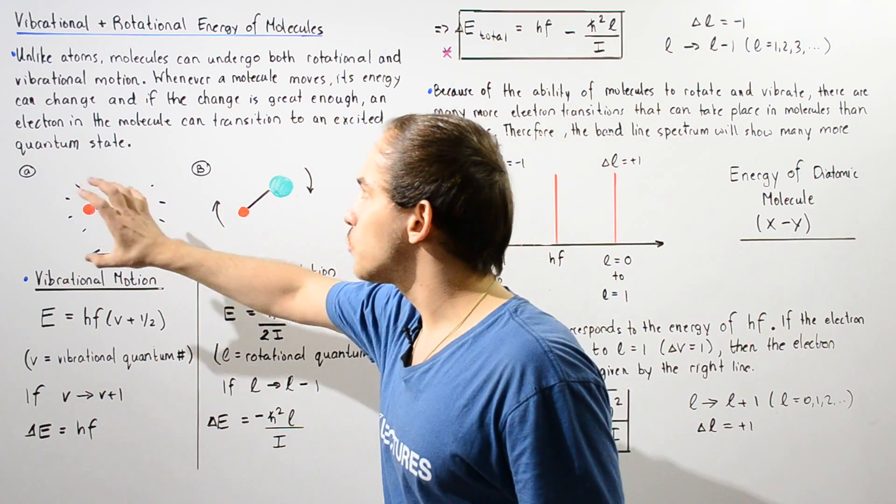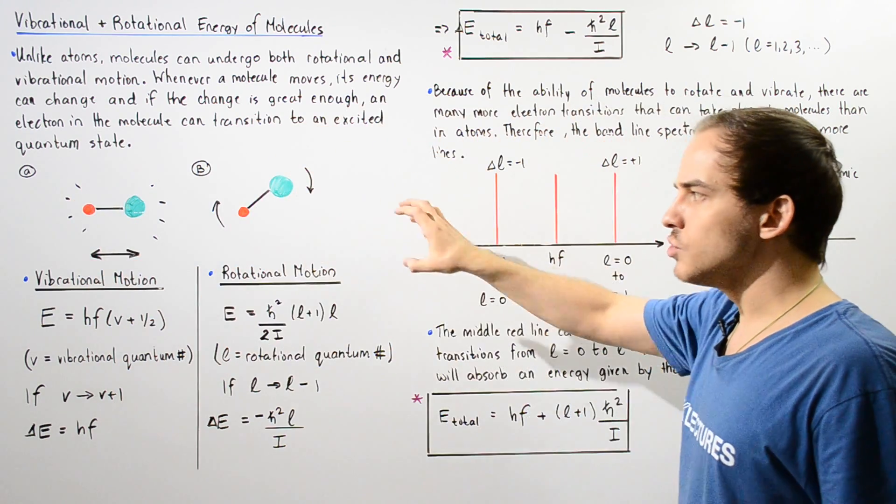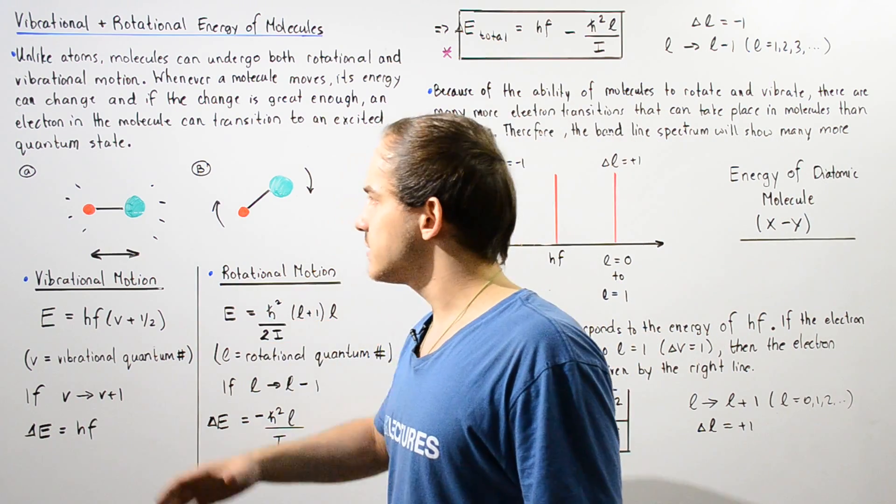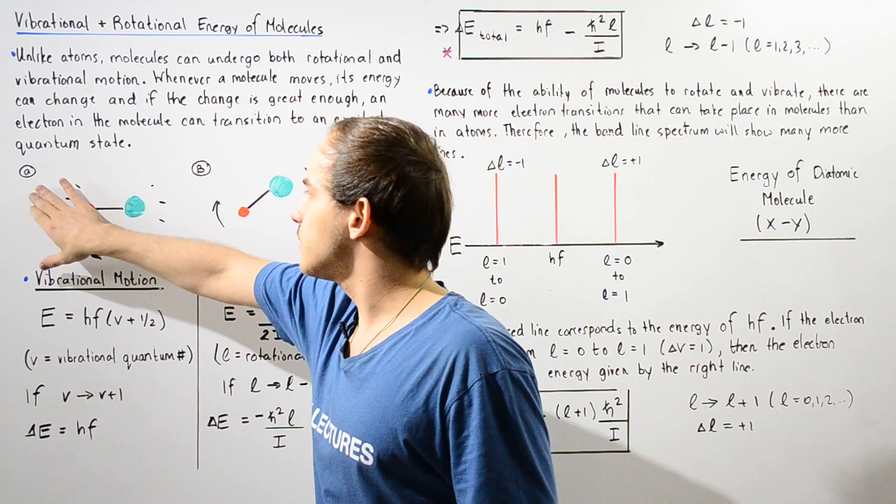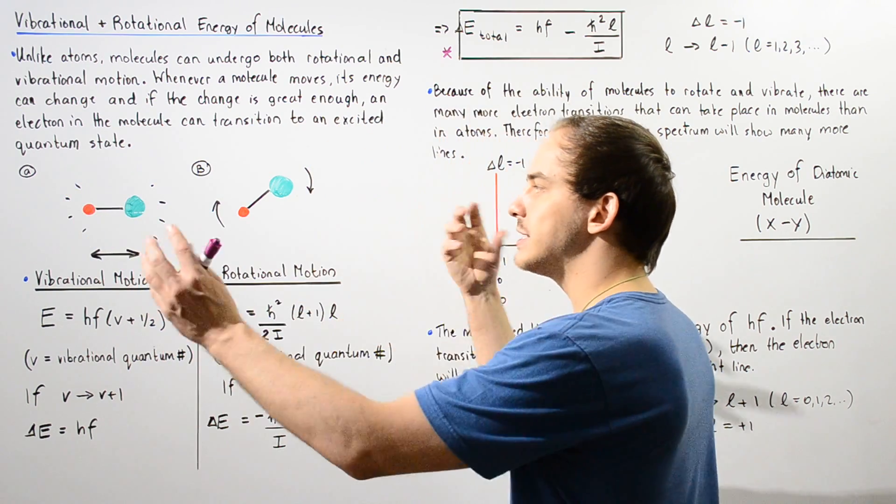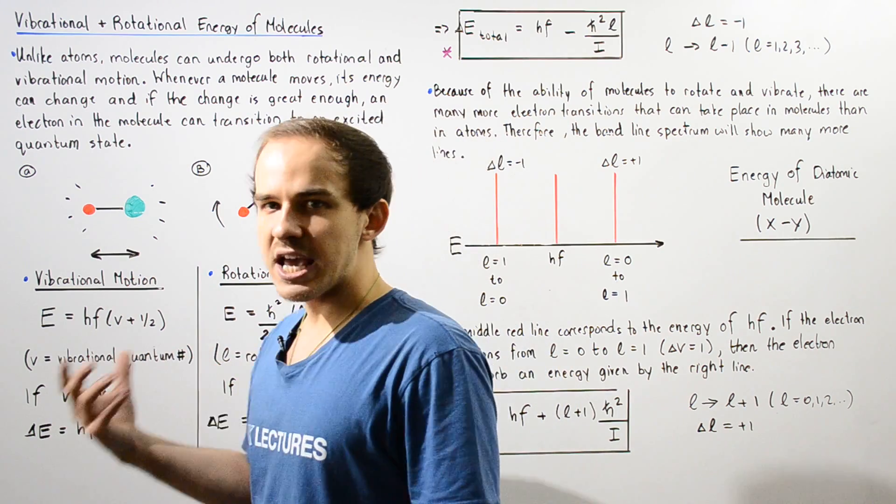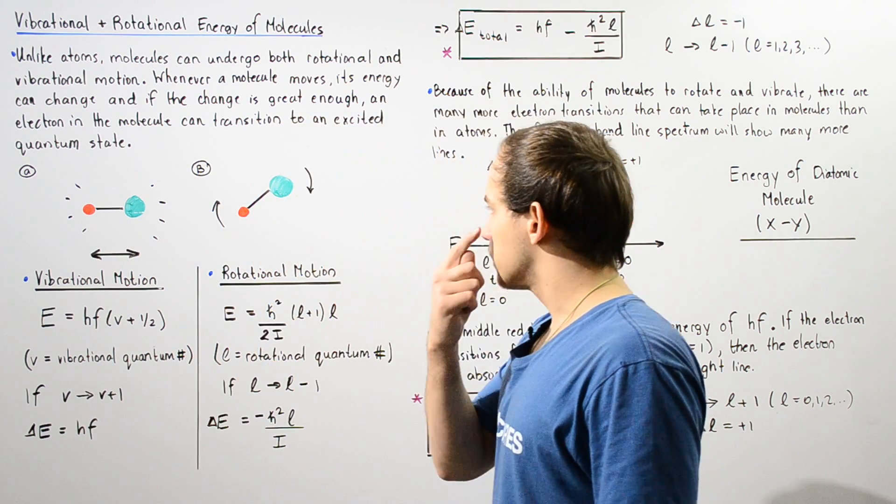So we have both vibrational and rotational motion can lead to this electron transition. So let's suppose we have diagram A in which our object is vibrating, is oscillating with some frequency F.